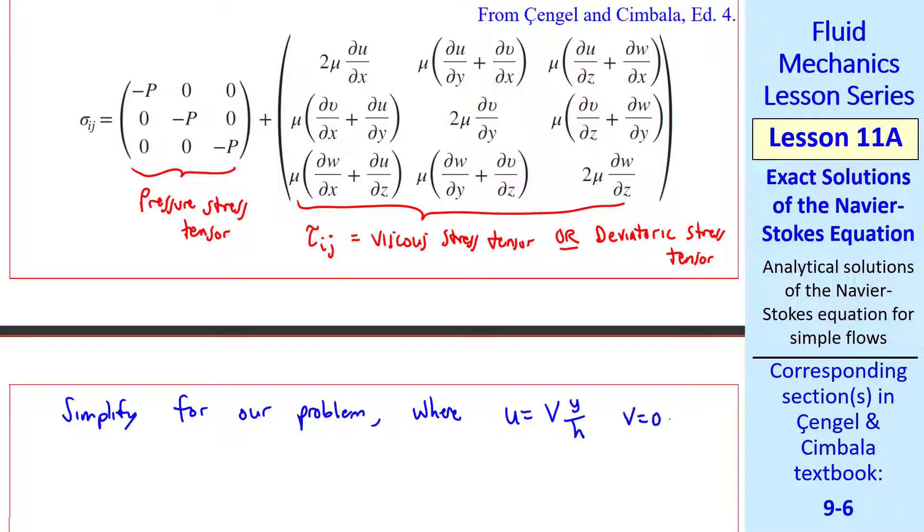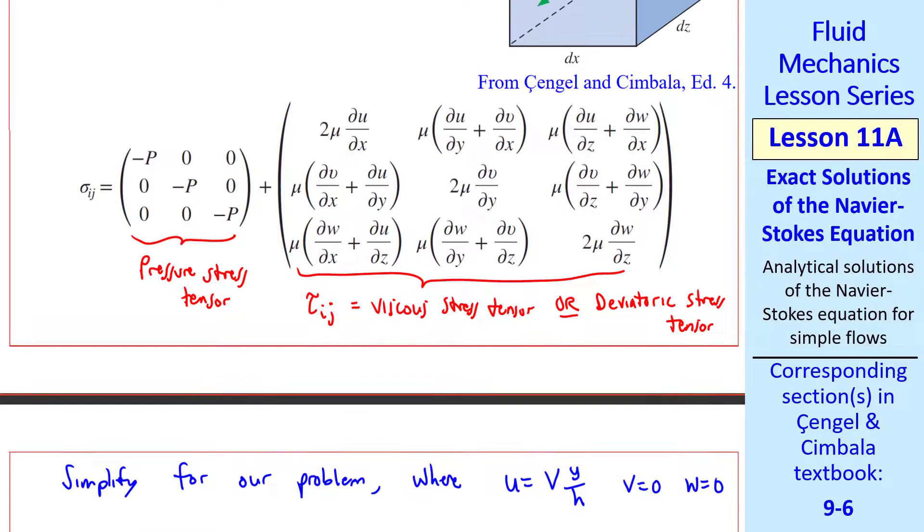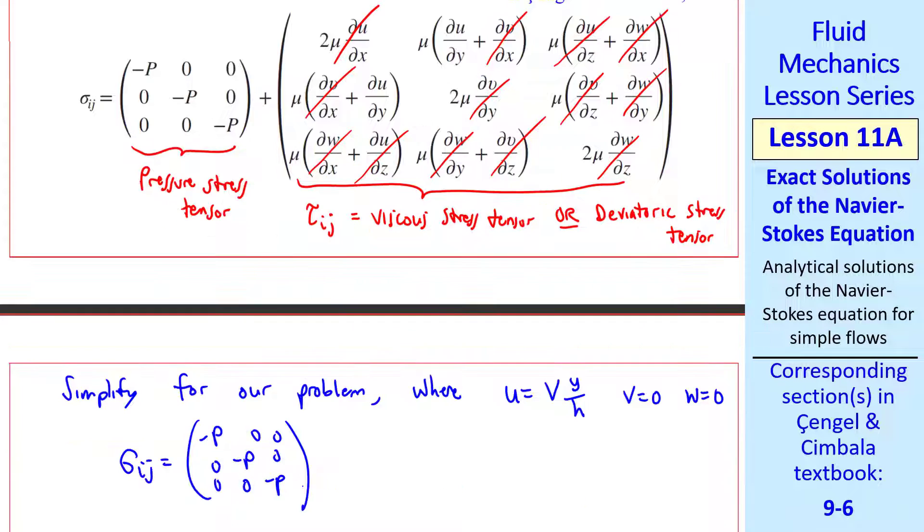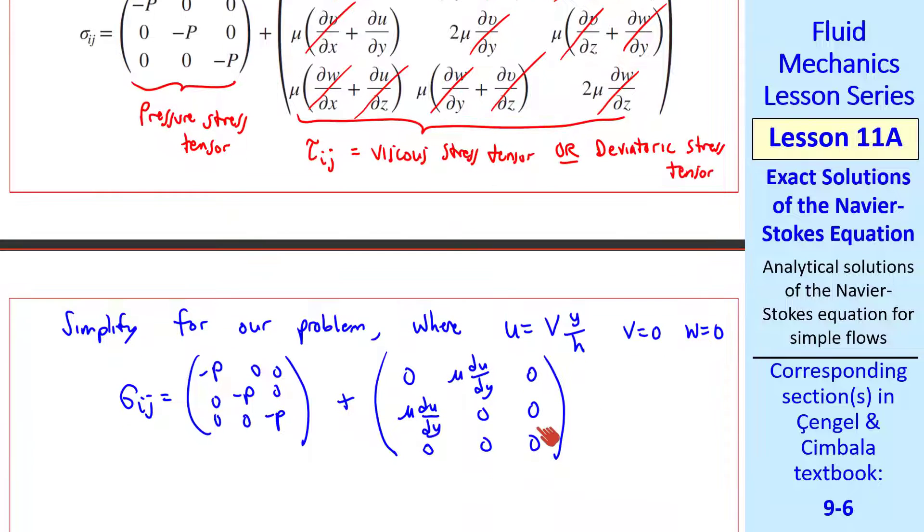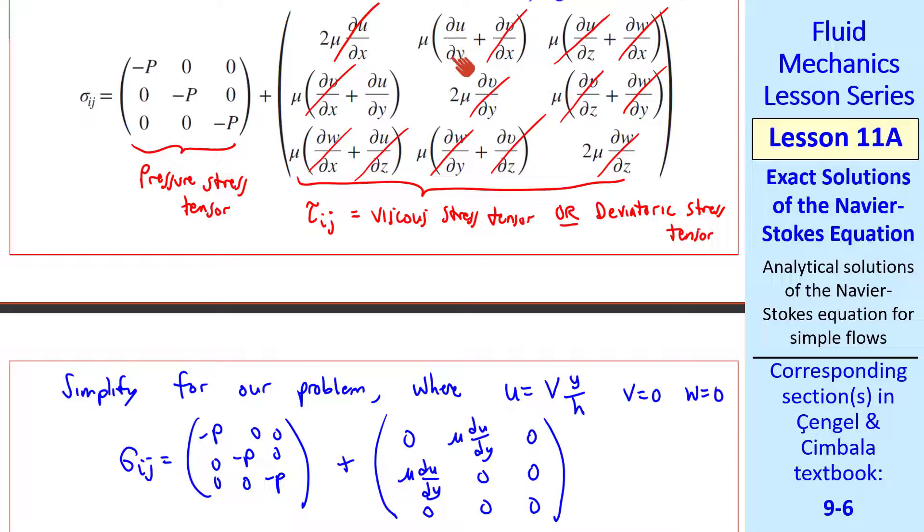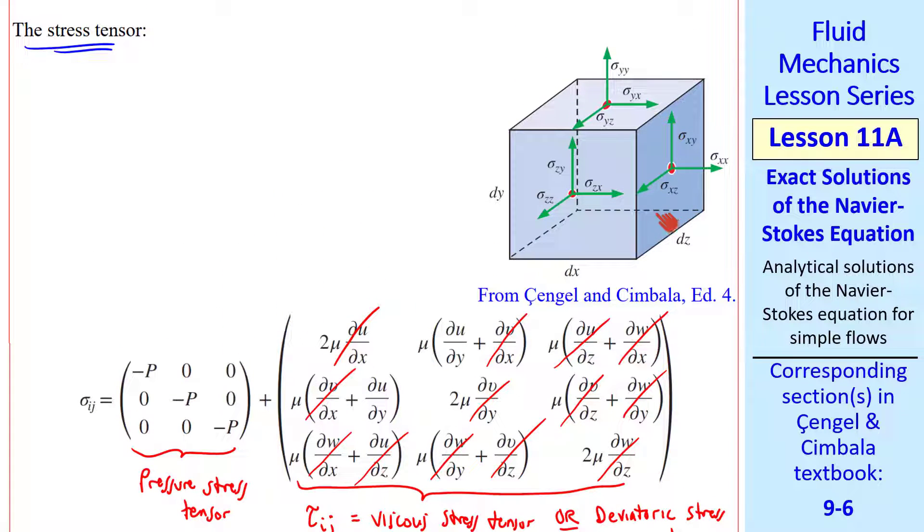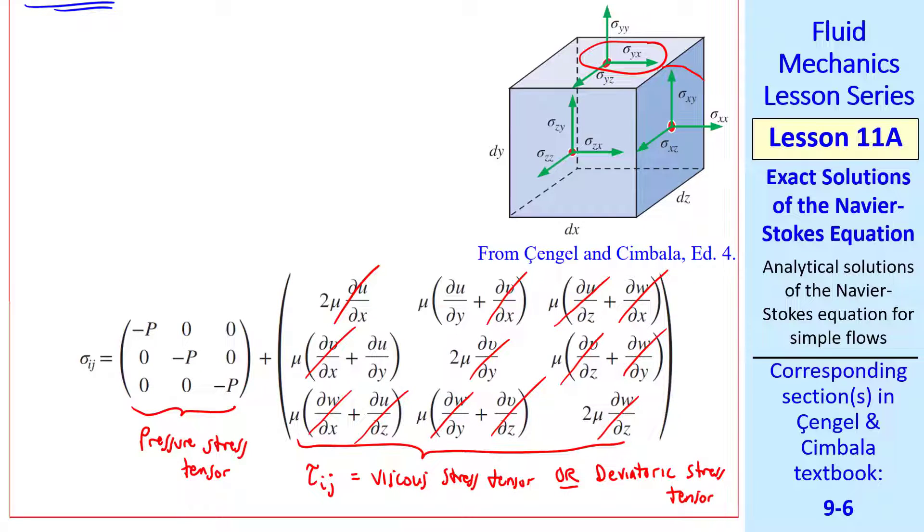Let's simplify this for our problem where u equals v y over h, v equals zero, and w equals zero. I'll cross off all the terms that go away. u is not a function of x. v is zero, w is zero, u is not a function of z. We're left with the pressure terms, and the only terms remaining in the deviatoric stress tensor are these two off diagonals, mu du dy. The only non-zero components are sigma yx and sigma xy, which are the same since this is a symmetric tensor.